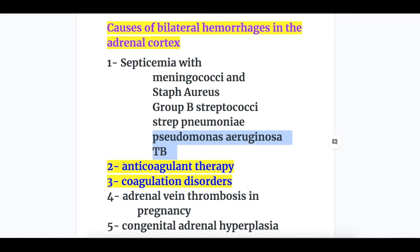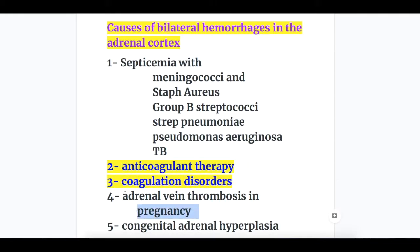The second cause of bilateral hemorrhages may be anticoagulant therapy. Number three, coagulation disorders related to blood. Number four, it may occur in pregnancy if there is thrombosis of the adrenal vein.